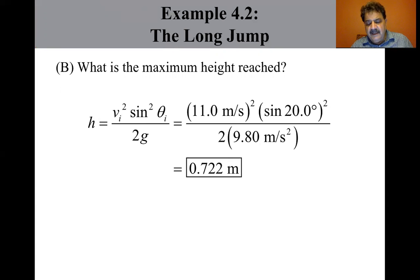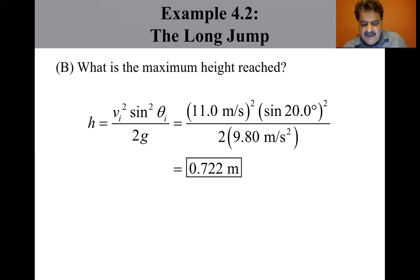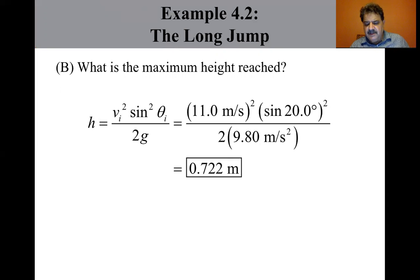To finalize, we try finding the answers to parts A and B using the general method — the results should agree. Treating the long jumper as a particle is an oversimplification. Nevertheless, the values obtained are consistent with experience in sports. We can model a complicated system such as a long jumper as a particle and still obtain reasonable results.